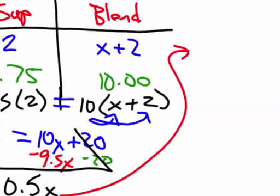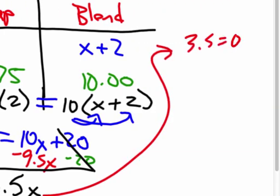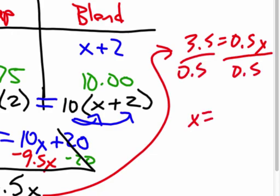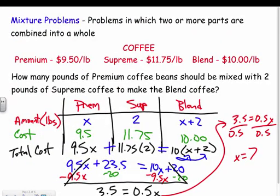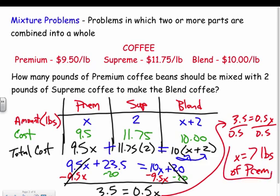Divide both sides by 0.5, and x equals 7. That x represents the pounds of premium coffee. So 7 pounds of premium coffee mixed with 2 pounds of supreme coffee gives us exactly the blended coffee at $10 per pound.